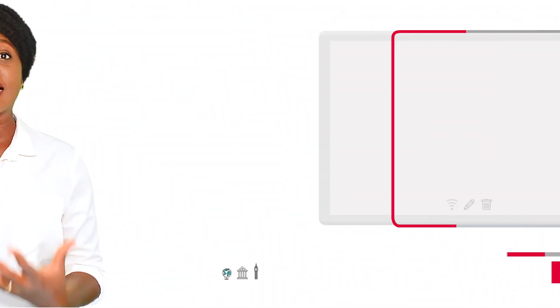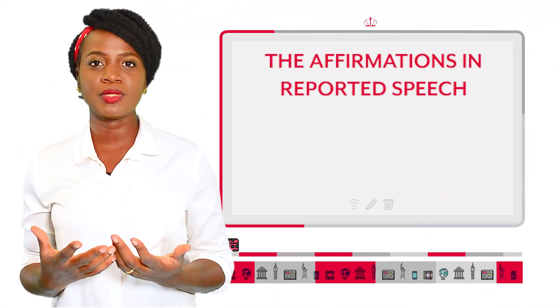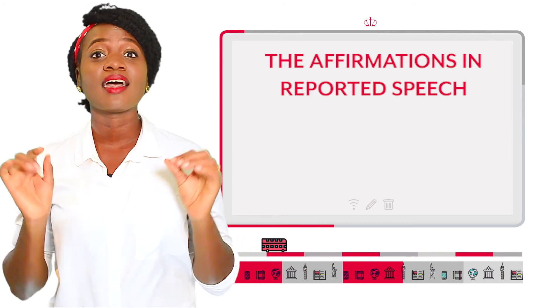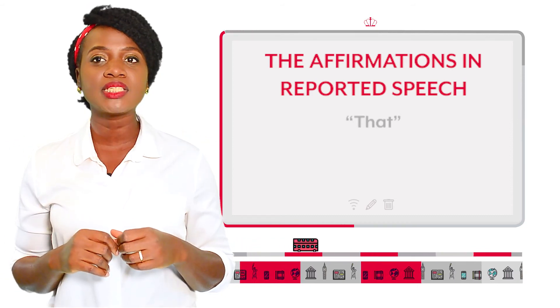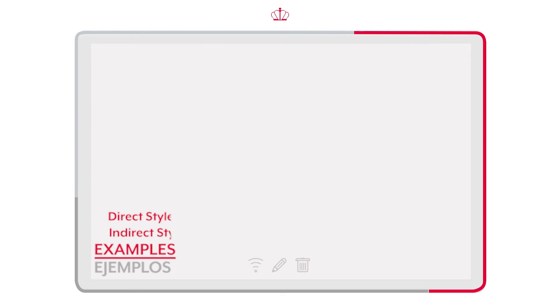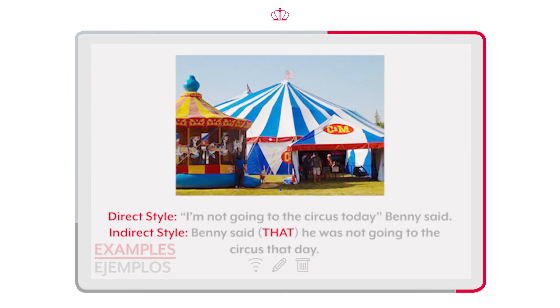Affirmations in reported speech: just keep in mind that 'that' can be included or omitted. Example: 'I'm not going to the circus today,' Benny said. Benny said (that) he was not going to the circus that day.